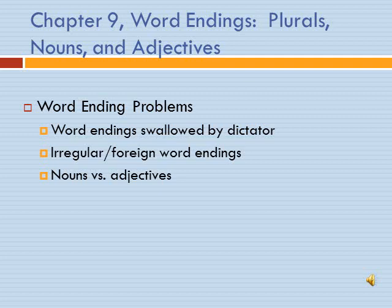Now why do we look at word endings, and why are there problems with this? We're going to concentrate on this because a lot of times, especially when we're working with dictated material, our word endings are swallowed up by the dictator. We can't always hear what they're saying. Also, we have irregular plurals, foreign words — those French words from last week, or Latin or Greek words — and our endings are different. The rules for forming those different plurals are different than our regular English words. We need to look at nouns versus adjectives, and the forms of those words, and how they change depending on what type of word we're talking about.